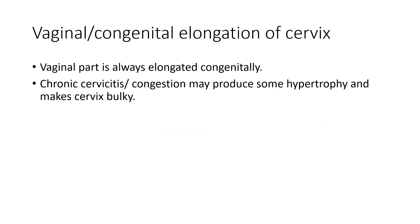Coming towards vaginal or congenital elongation of the cervix: when the vaginal part of the cervix is elongated, the uterus is intact and the supra-vaginal part is also intact. Only the vaginal part is elongated. This is the vaginal or congenital elongation of the cervix.